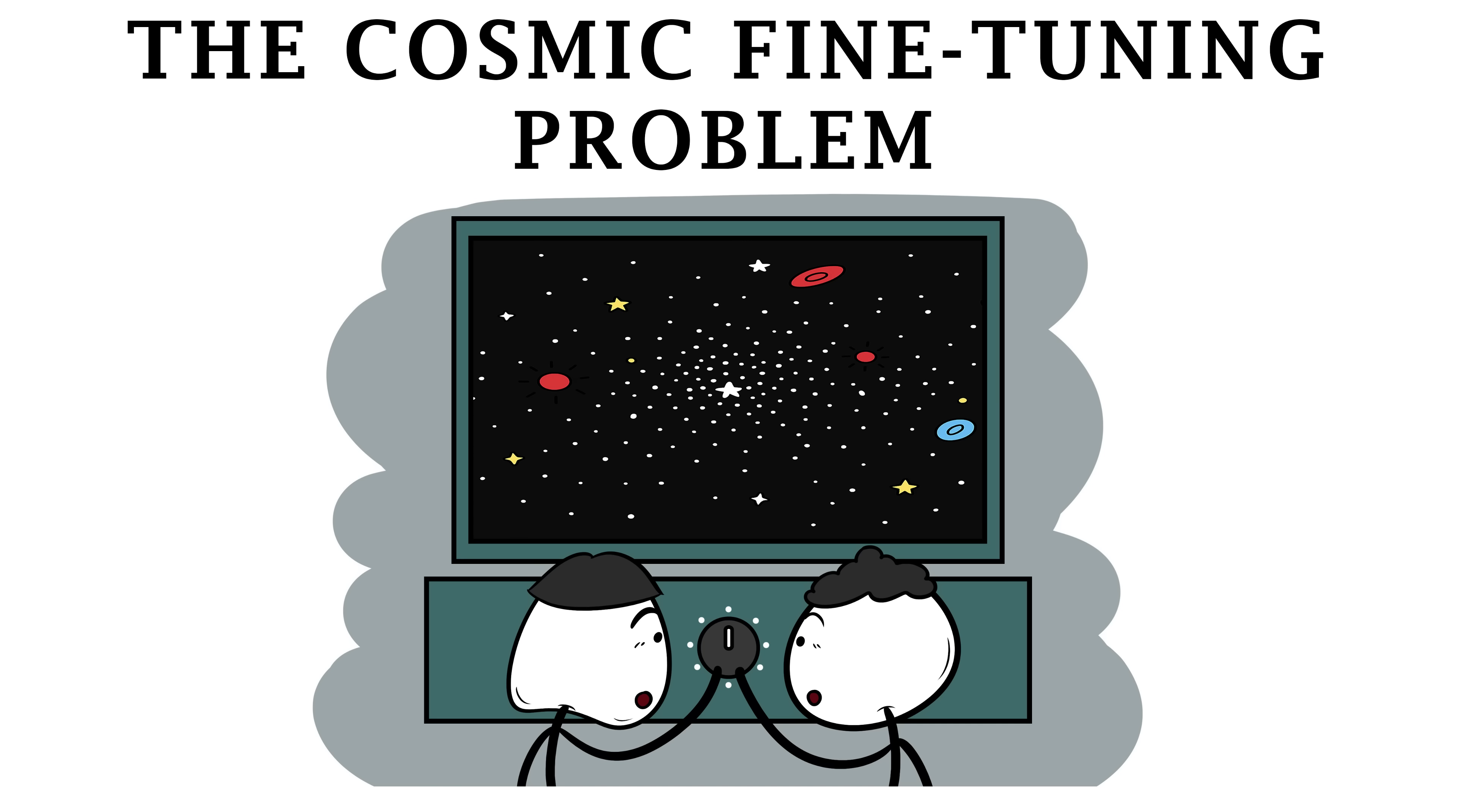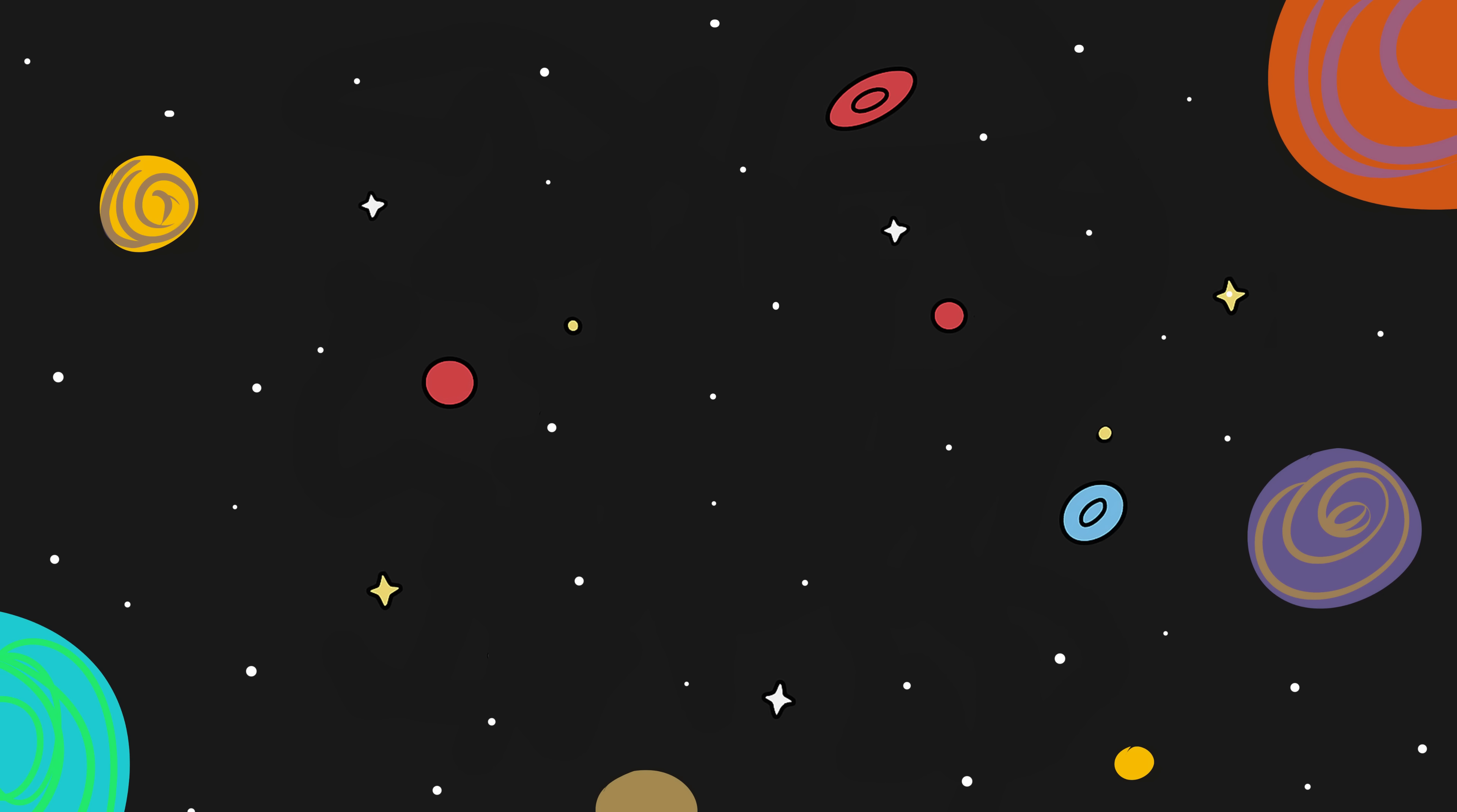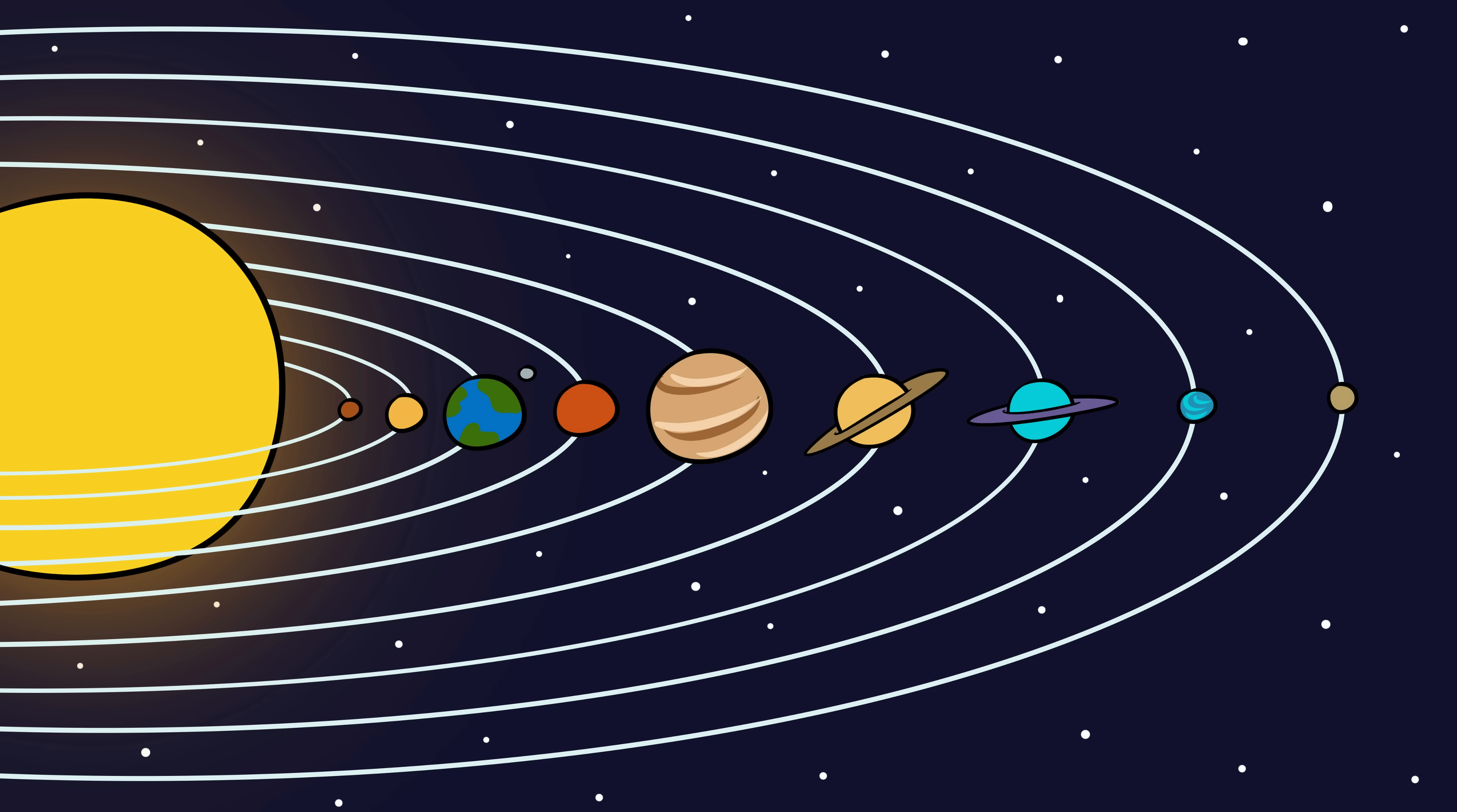Number 9, the cosmic fine-tuning problem. The universe looks random, but it's actually ridiculously precise, almost suspiciously so. Every single constant in nature, from the strength of gravity to the charge of the electron, has a value so specific that if it were off by even a fraction, everything we know would fall apart.